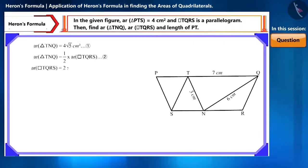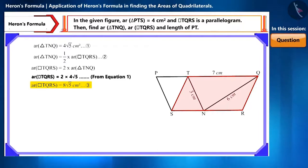By writing this equation in this way, we can find the area of the quadrilateral TQRS. We will obtain the area of the quadrilateral TQRS as 8√5 cm².